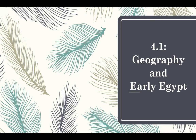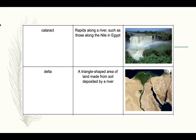Hello class, this is section 4.1, Geography and Early Egypt. Before I start talking about the first section on the gift of the Nile, I wanted to cover a few of the important vocabulary terms from it.